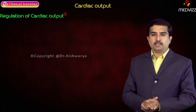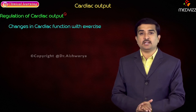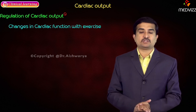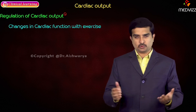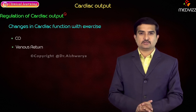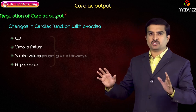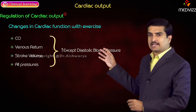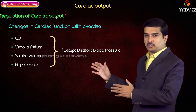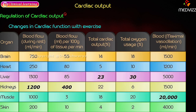During exercise, cardiac output, venous return, stroke volume, and all pressures are increased, except diastolic blood pressure. Let us now discuss blood flow to various organs of the body.